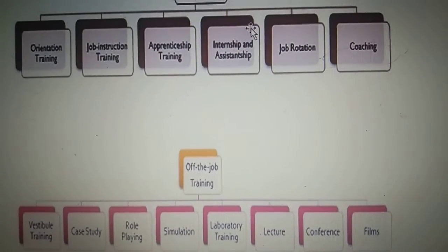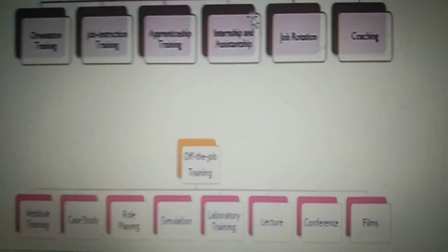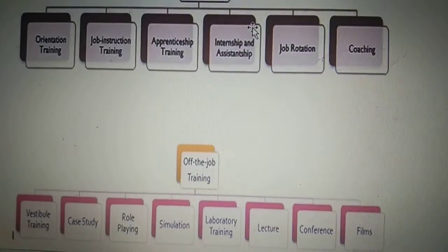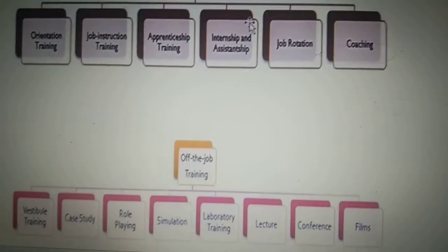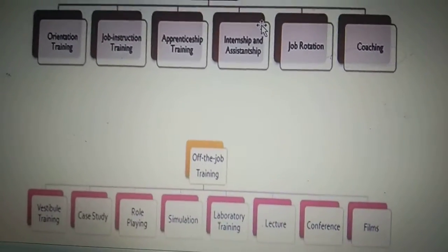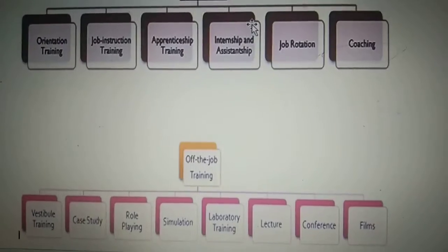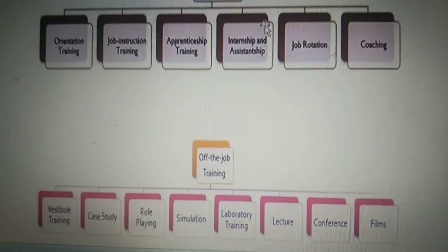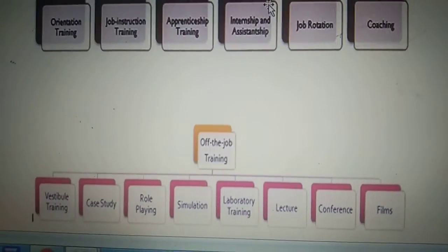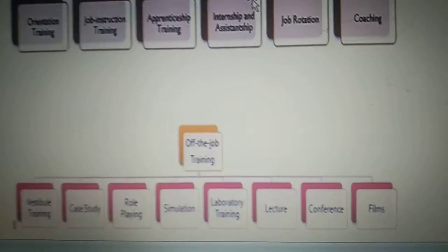Next is the films method. This is another off-the-job training method where we can provide information and demonstrate skills that are not easily represented by other techniques. We use a film method — that is, whatever we want to teach the individuals, we show those skills visually through films.